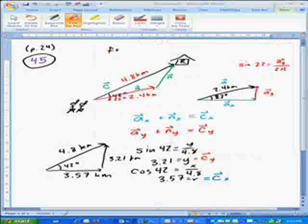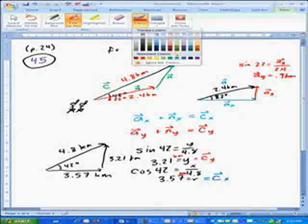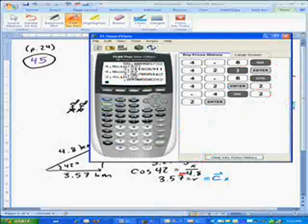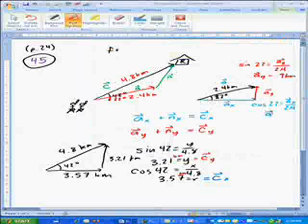So a in the y direction is 0.9 km. These are all in kilometers. And then we'll do the same thing for a x. So that would be the adjacent side over the hypotenuse, so we're going to need cosine. So cosine of 22 equals vector a in the x direction divided by 2.4. So 2.4 cosine 22, and I get 2.2.